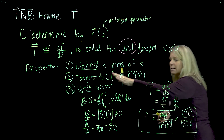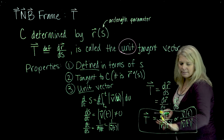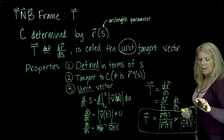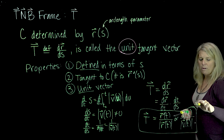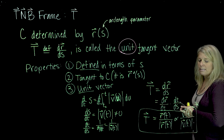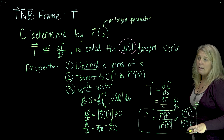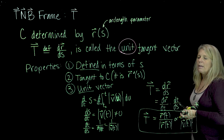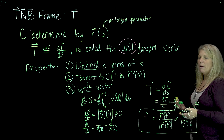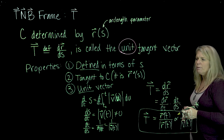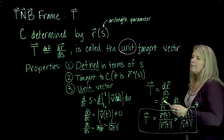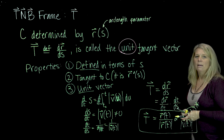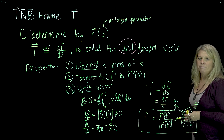So in justifying that T is a unit vector, we've got this shortcut formula T = V/|V|. We're going to look at an example of calculating the T vector and will calculate it this way. When we look at a graph, we should be able to see that that vector is tangent to the curve, and we should be able to see that it is one unit long.